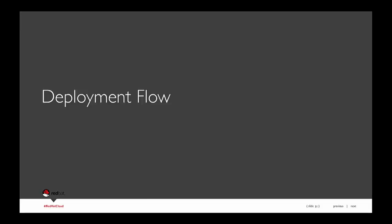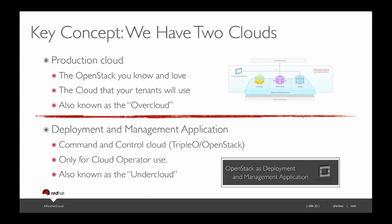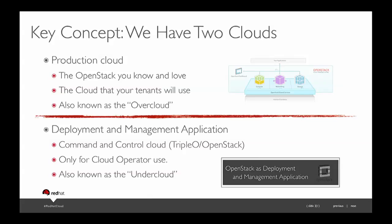Let's talk about the deployment flow. There's a key concept here: we have two clouds. Inside this black box is OpenStack — this is OpenStack in a box, that's cloud number one. That cloud deploys what we call the production cloud — the one the tenants will see. The production cloud is the one your tenants will use. If you're talking to an engineer at a design summit, they're going to call it the overcloud.